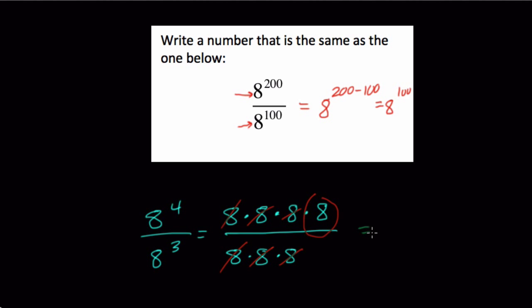The shortcut to think about that is, well, in this case at least, we would have 8 to the 4, the 4 8s in the numerator, minus the 3 in the denominator. And that would be 8 to the 1st.